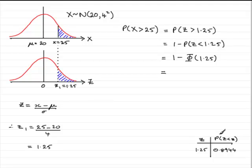That means we get 1 minus 0.8944, which equals 0.1056. That is the answer to this part of the question.